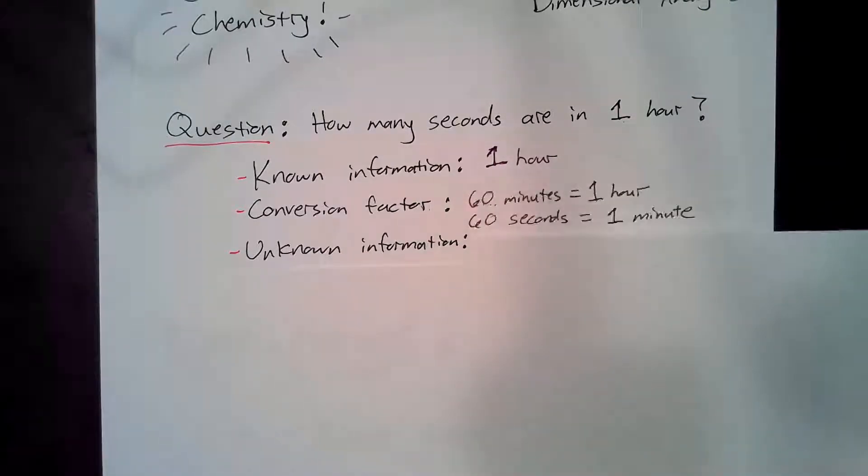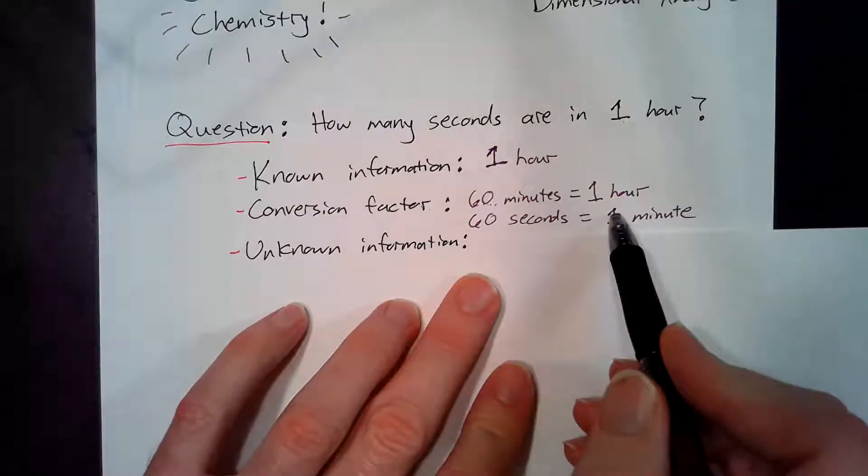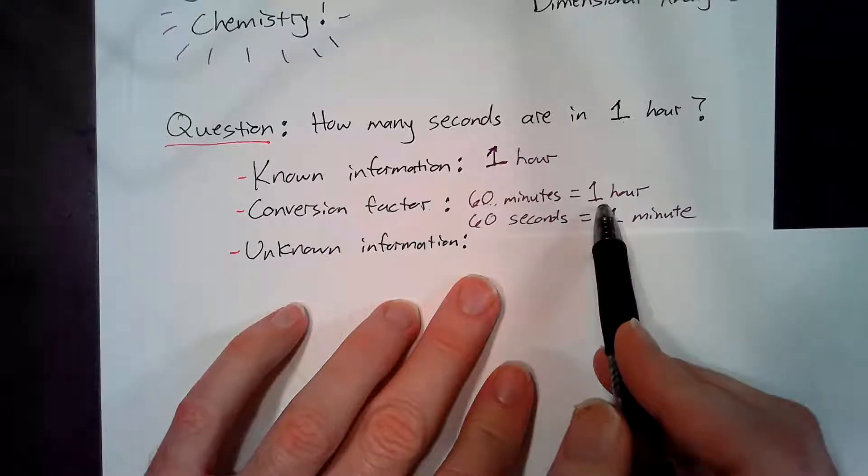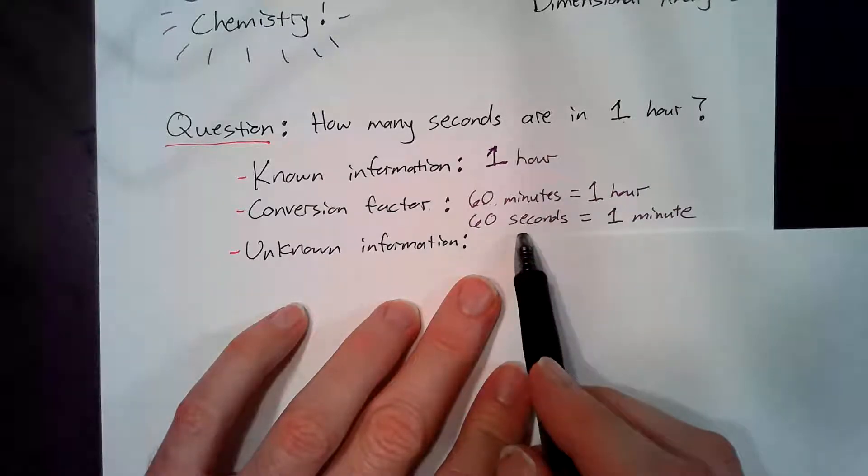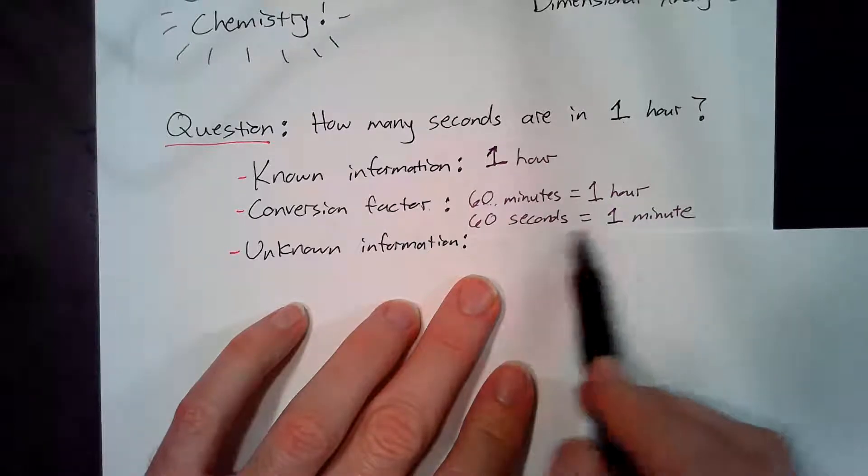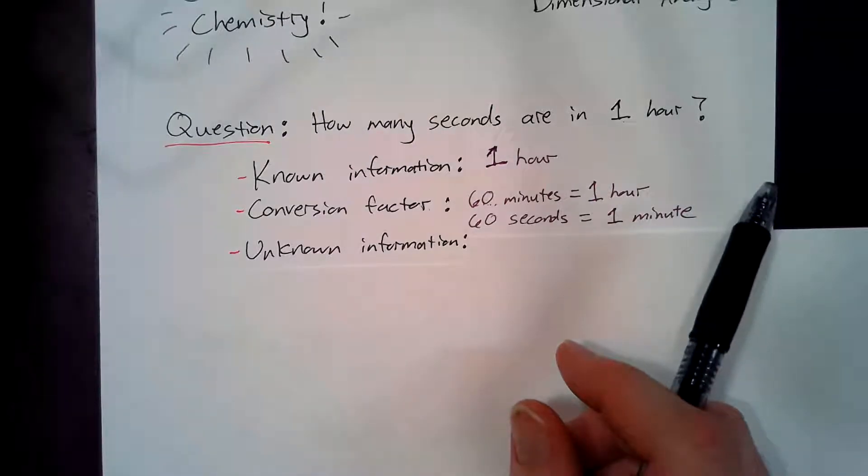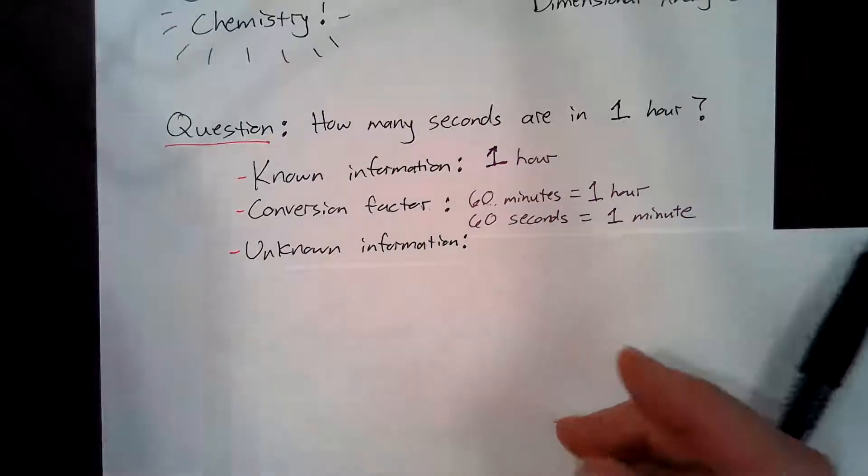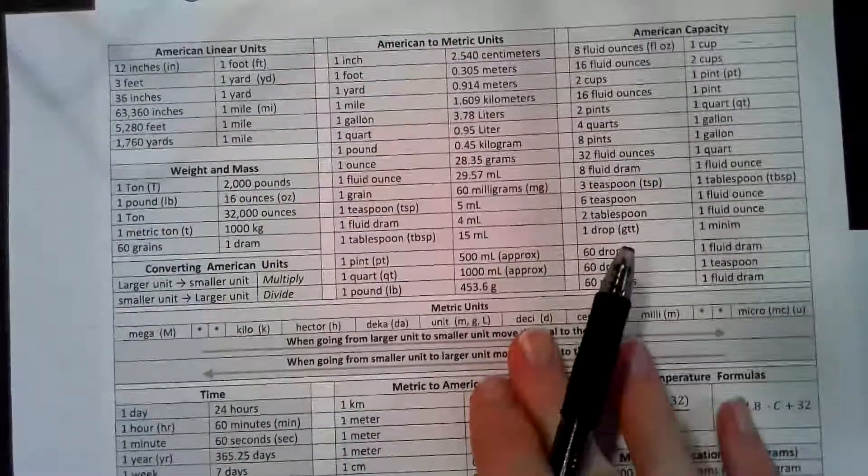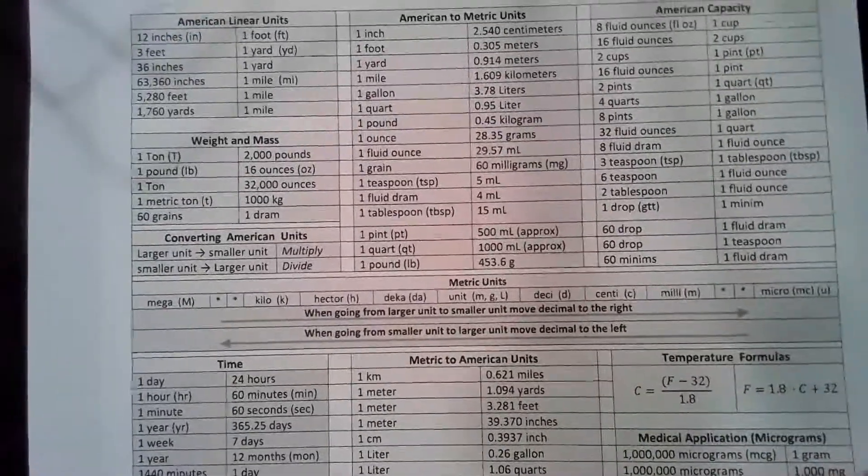Now the conversion factor is something that you kind of have to come up with or have stored in your brain. You guys do know that there are 60 minutes in one hour, and you should know that there are 60 seconds in one minute. Sometimes you have them memorized, but sometimes you have to go to a conversion chart. It's not important to learn all of these, but these conversion charts are very, very helpful whenever you're trying to do these kind of problems.